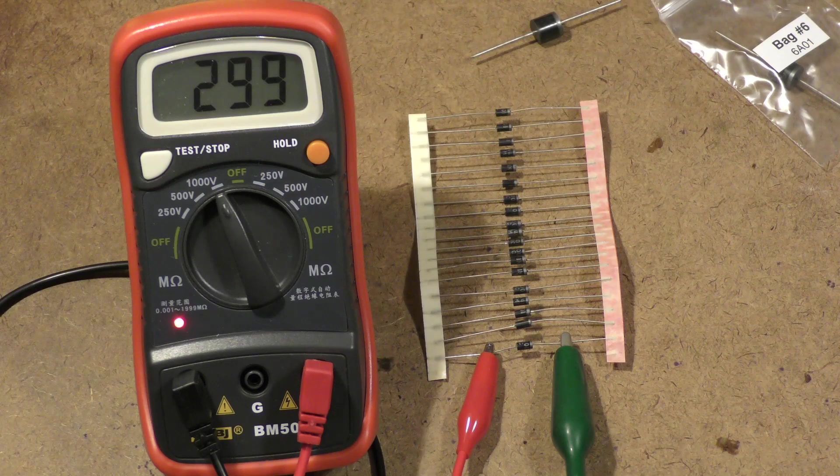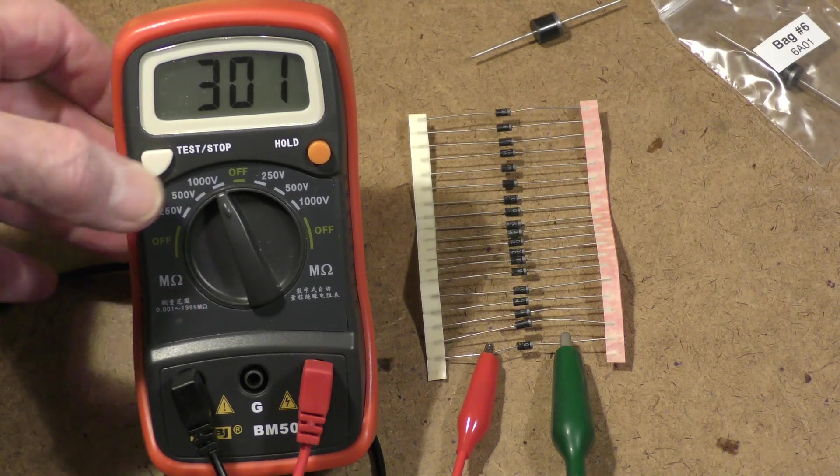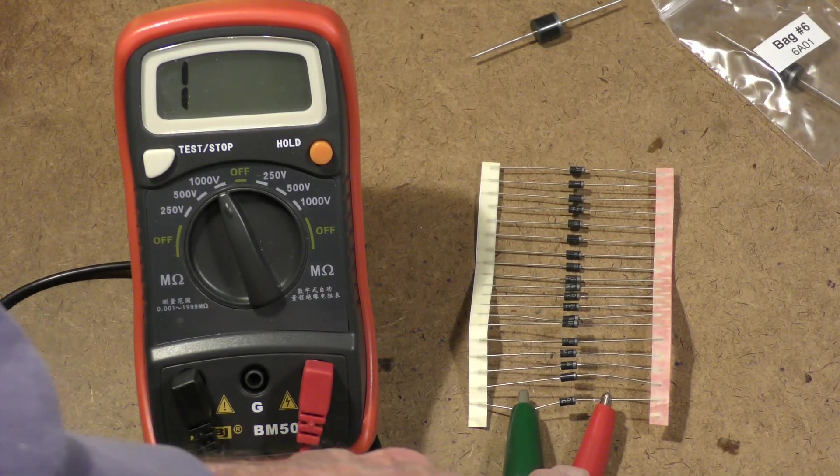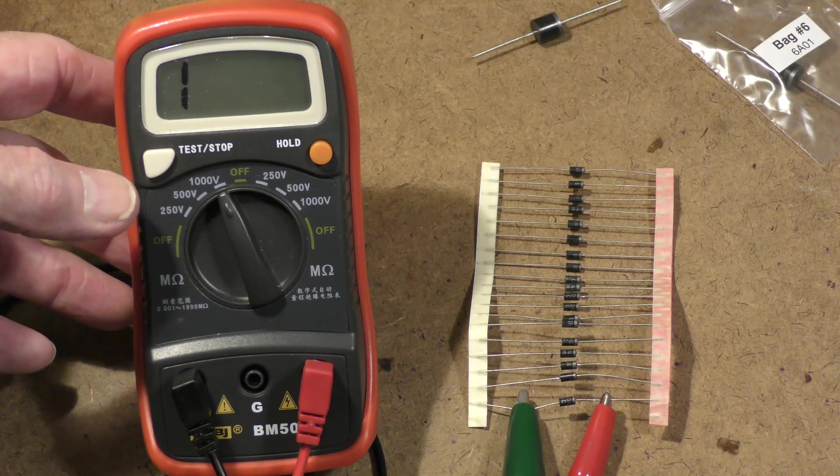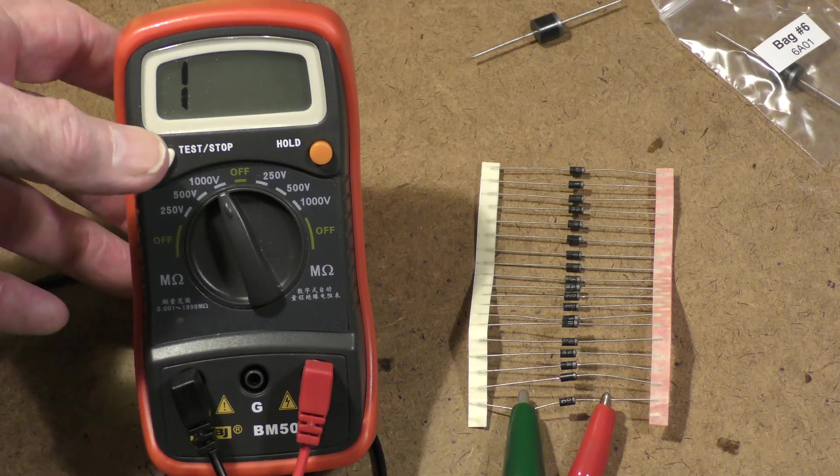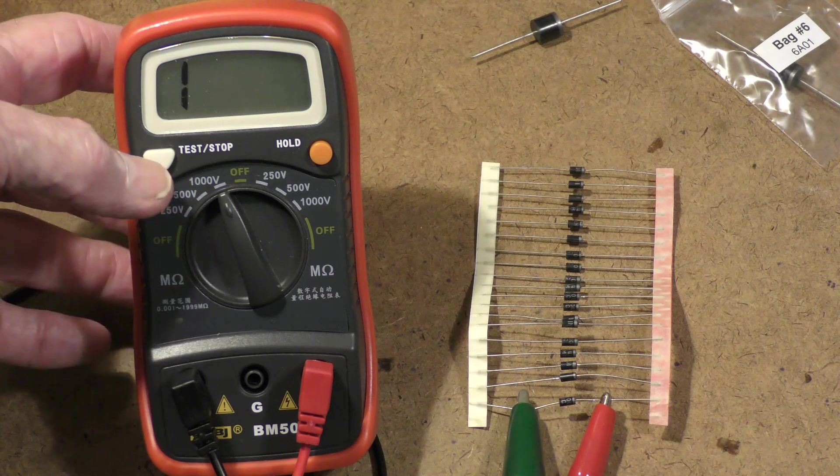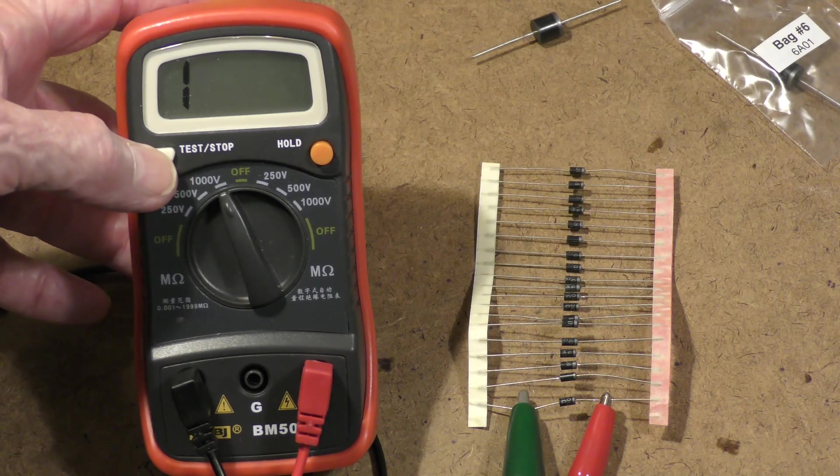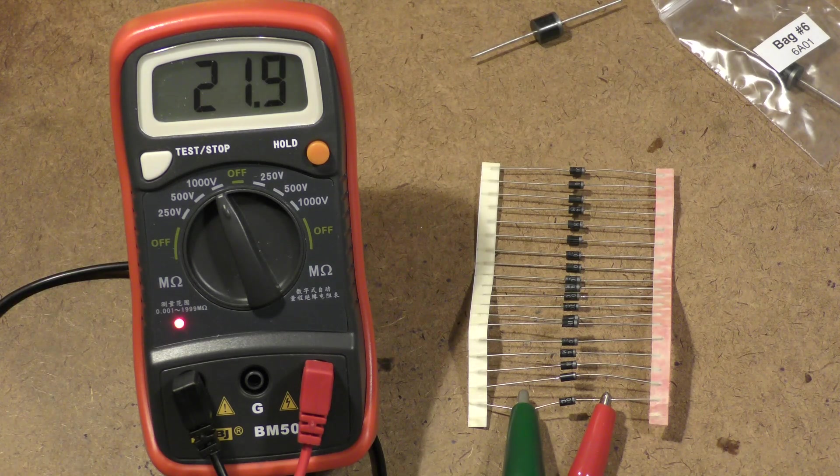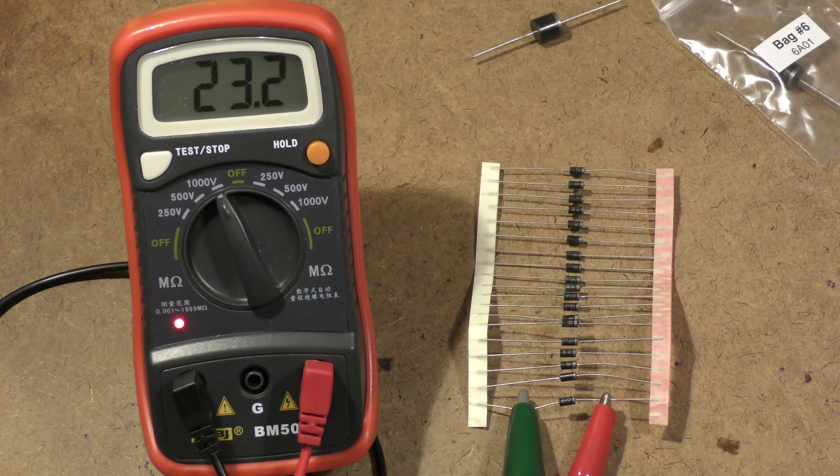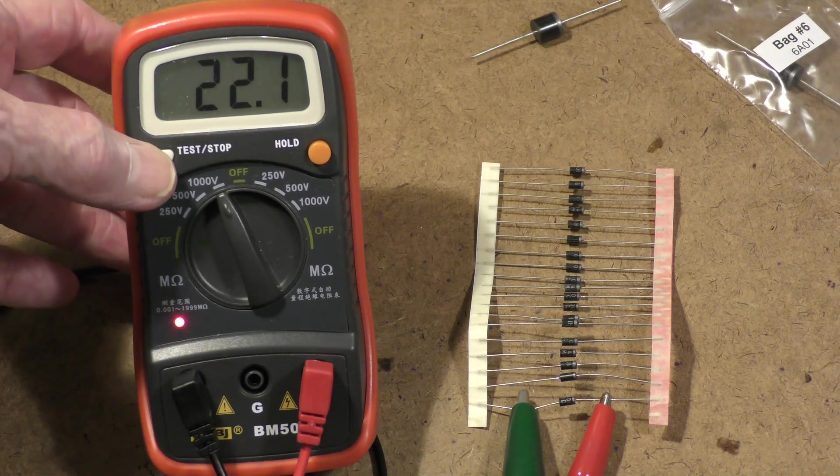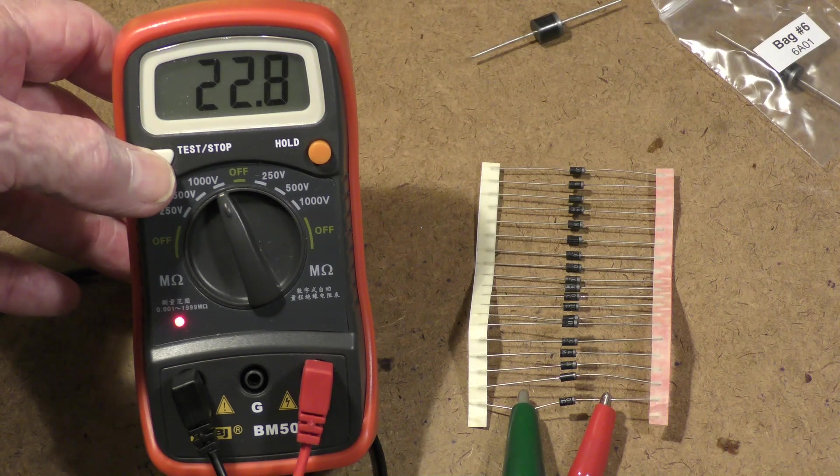Now I have reversed the polarity and we'll test again. This means we are now testing the diode in its forward direction, so it should read the value of the limiting resistor, which is a 22 meg resistor. We get about 22 or 23 meg, which is what the current limiting resistor is.